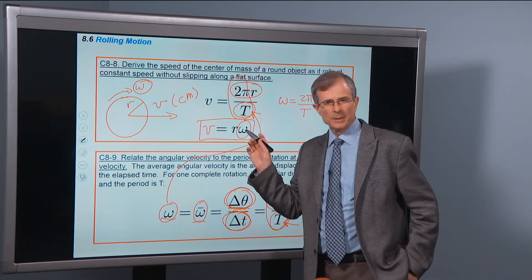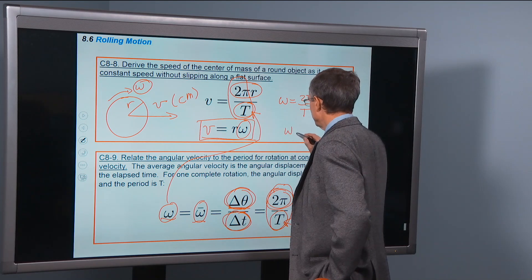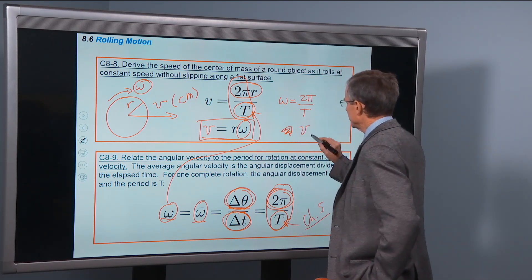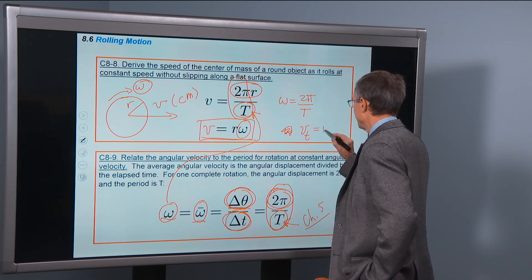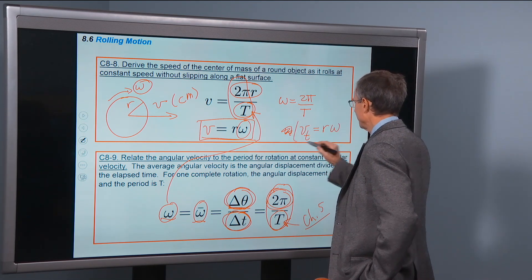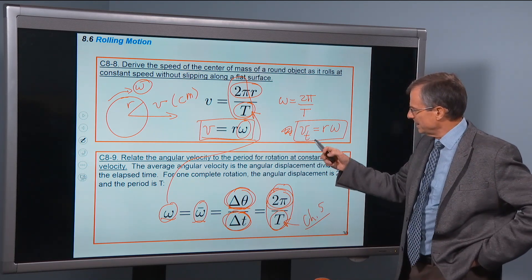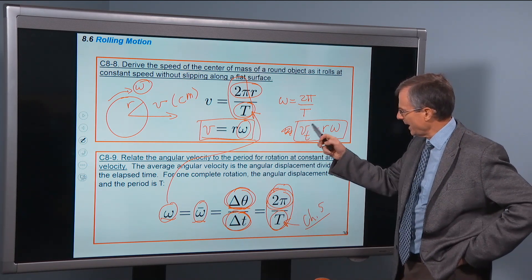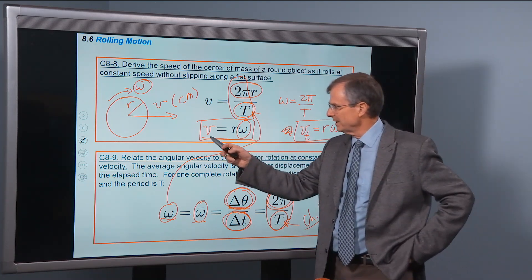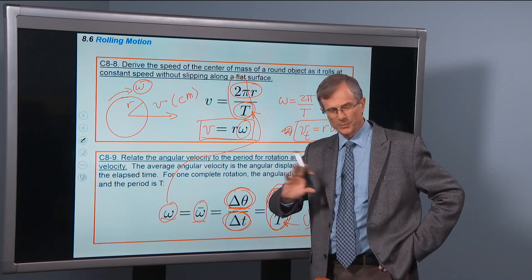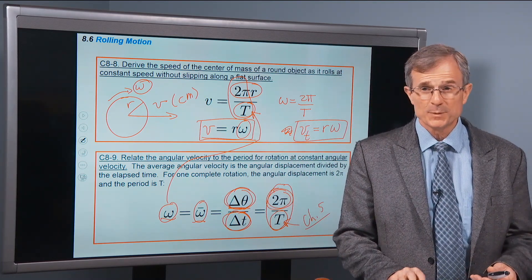The other interesting thing about this one is that this looks just like our relationship for the tangential speed, which says that the speed of the outer rim of a circle of radius r is equal to the speed of the center of mass of that circle as it rolls without slipping. Pretty cool. It has to be.